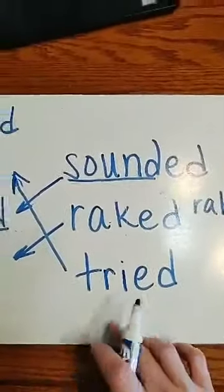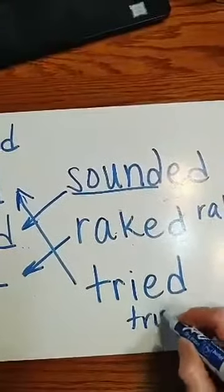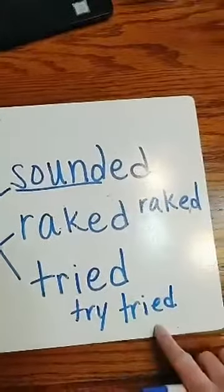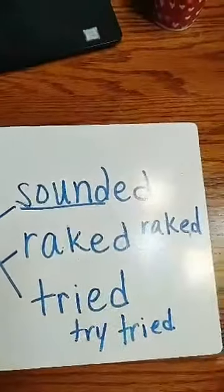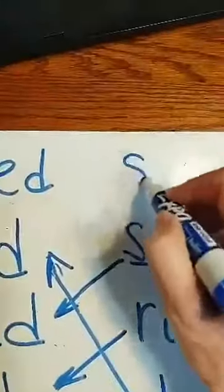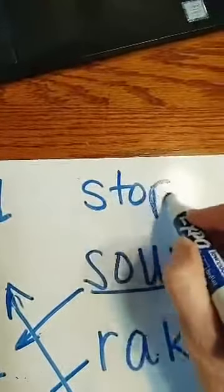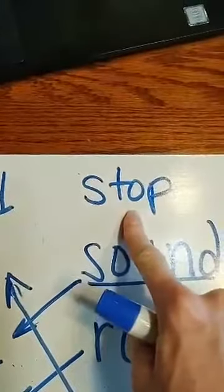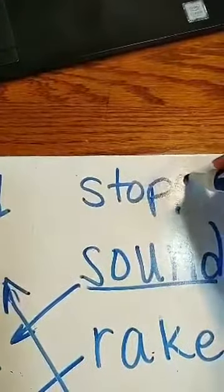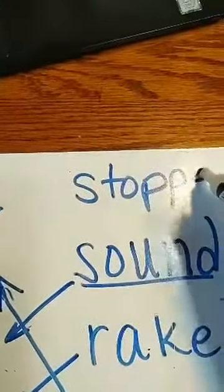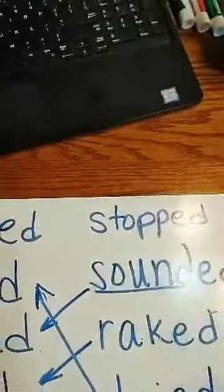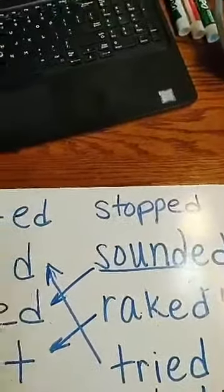Now, sometimes that Y, because this was try, changes to an I, and then we add ed. Okay? Okay? But we're not going to have two E's together there. Now, sometimes our vowel in a word is not saying its name. When it is saying its sound, we put another ending letter, P, and then add ed. E, stopped, stopped, stopped.